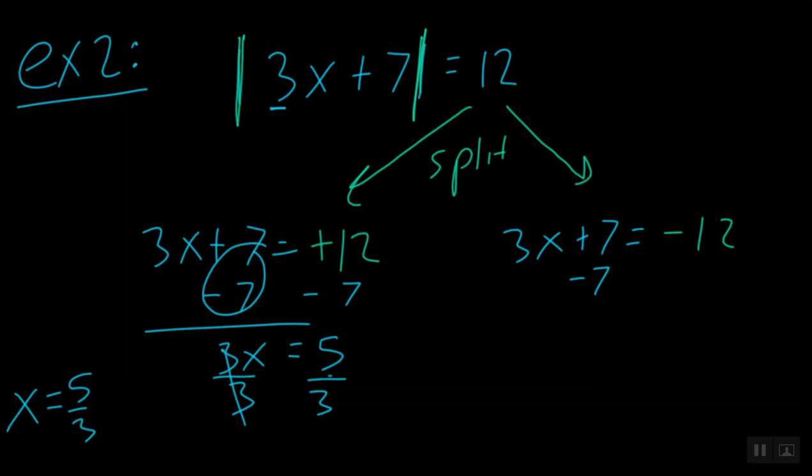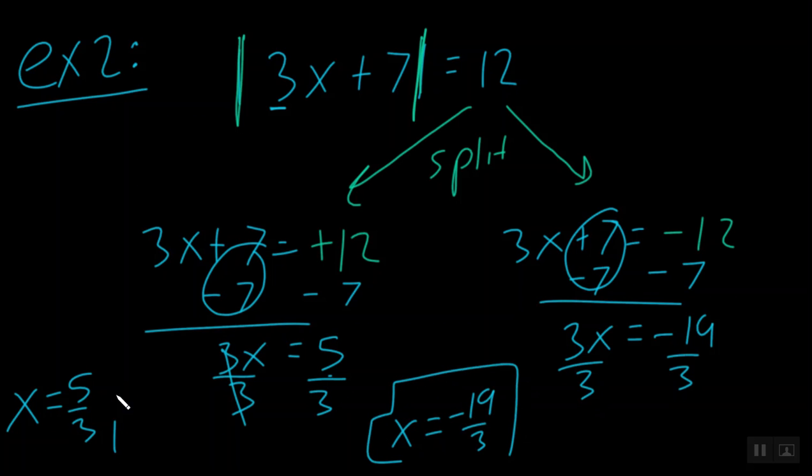Over here I can do minus 7, minus 7. That zeroes out. I have 3x is equal to, y'all, what is negative 12 minus 7? Well, that's going to be negative 19. And now, we divide both sides by 3, and we get x equals negative 19 over 3.